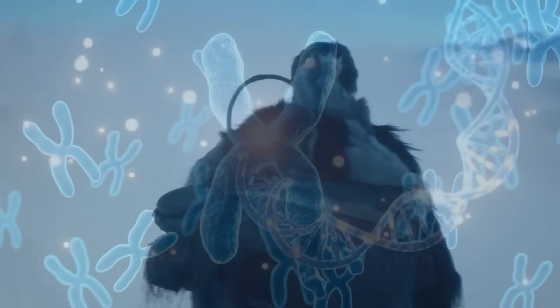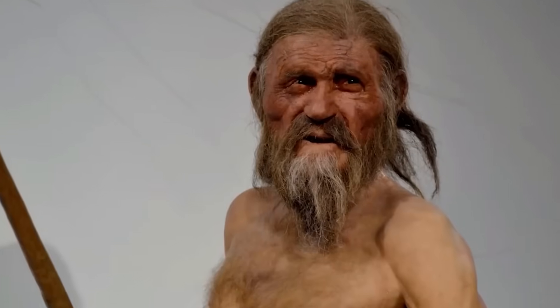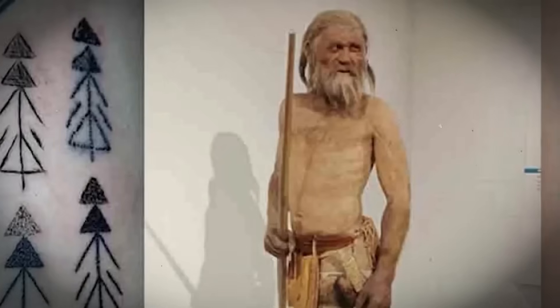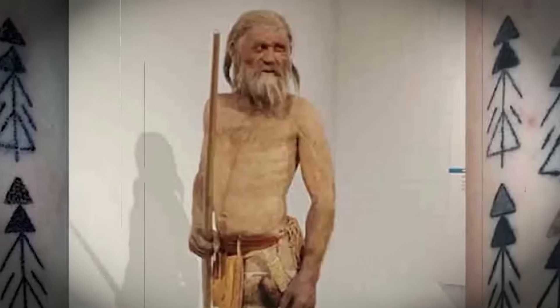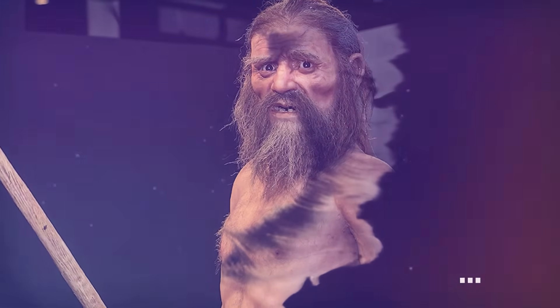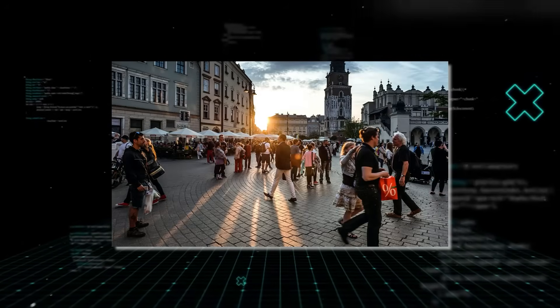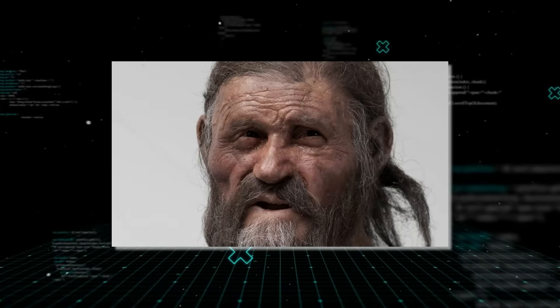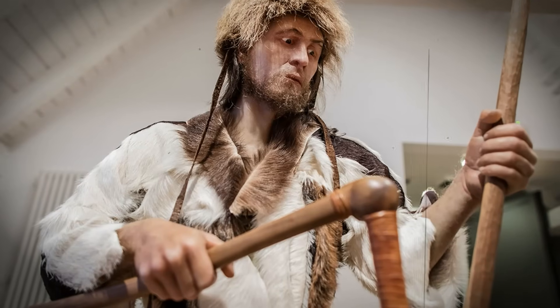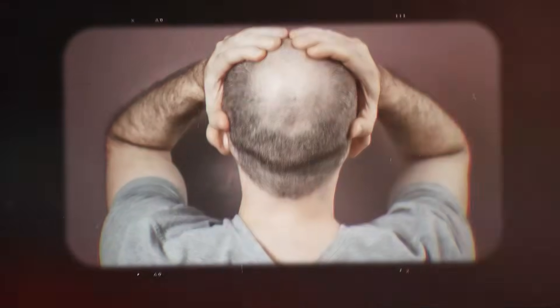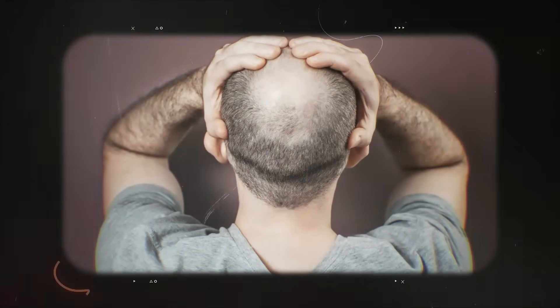The surprises didn't stop there. The DNA also held the code for his physical appearance, and it destroyed every reconstruction ever made of him. For decades, Ötzi was depicted with fair skin, light-colored eyes, and a full head of shaggy brown hair. It was an image we all knew. It was also completely wrong. The new analysis was crystal clear. Ötzi had dark skin, far darker than the average modern European. His eyes were not light. They were a deep brown. And that thick hair? It was a fantasy. Genetic markers showed he had a strong predisposition for male pattern baldness, and was likely losing his hair long before he passed away.